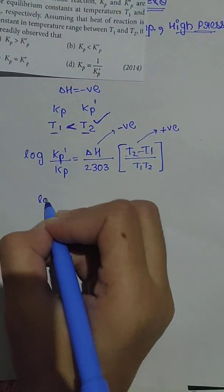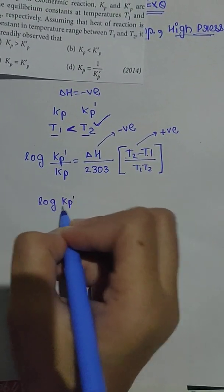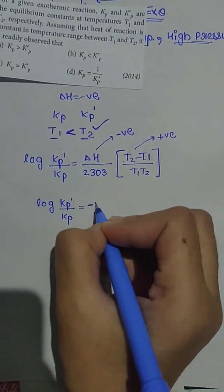Plus times minus is minus, that means log of kp prime upon kp, this overall value will be negative.